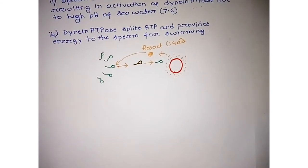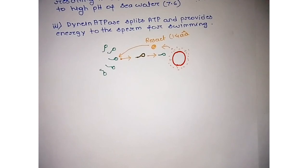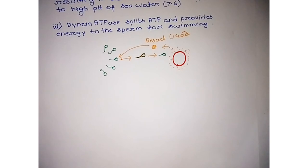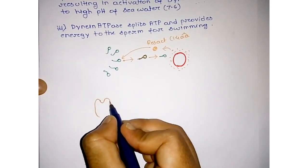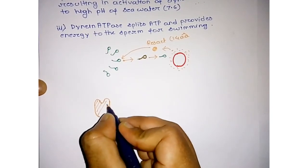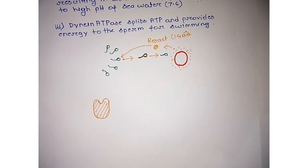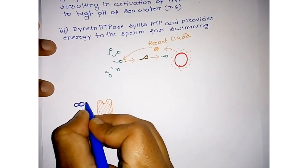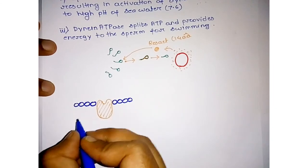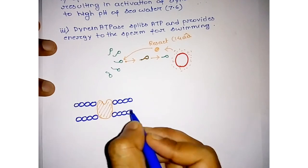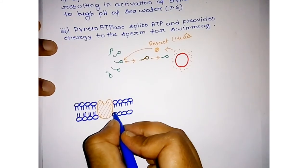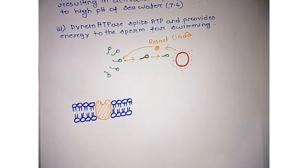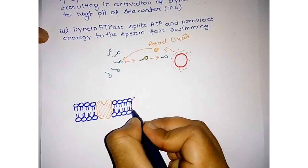Now, what is the role of resact? We understand it with a diagram. Suppose there is a membrane. Then this is the resact receptor, also known as RGC receptor. This is resact receptor, and there is lipid bilayer present. Now an important channel is present - that is the calcium channel.